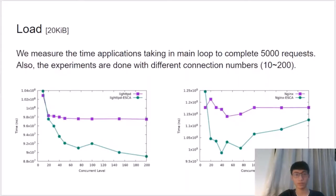Besides throughput, we also care about latency after applying ISCA. We measure it by counting the time an application takes in the main loop to complete 5000 requests, where clients request files of 20 KB each time, with connection numbers between 10 and 200. We found both Lighttpd with ISCA and Nginx with ISCA spend less time in the main loop than vanilla applications.